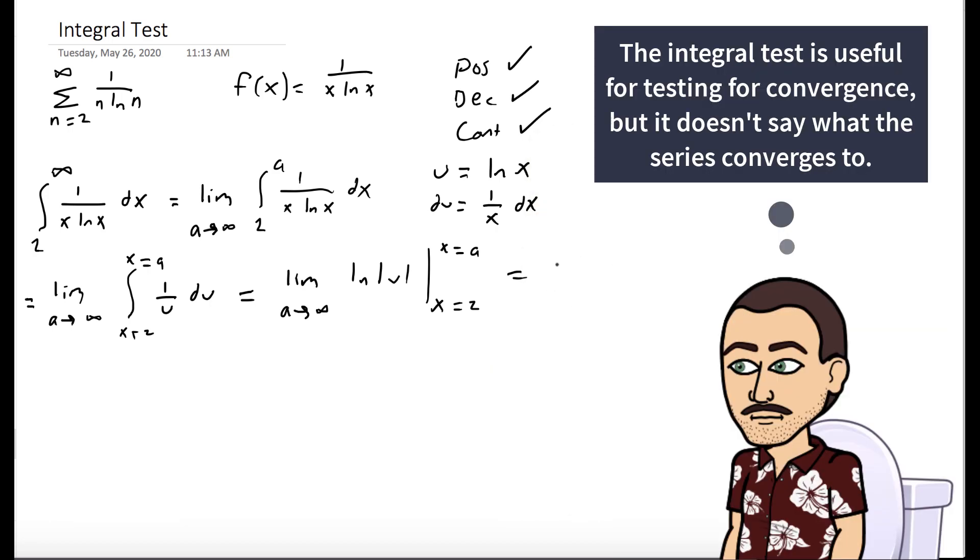Well, now let's switch back to the variable we started with. So it's the limit as a goes to infinity of the natural log of the absolute value of the natural log of x, evaluated at 2 and a.